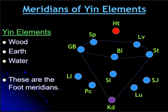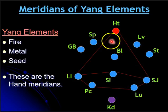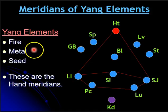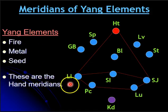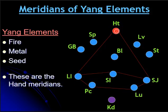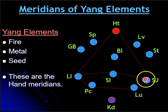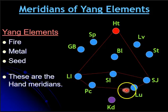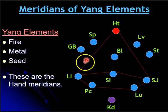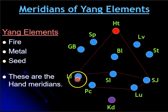Now we come to the meridians of the yang elements. The yang elements are fire, metal, and seed, and these are the hand meridians. You'll have the pericardium, lung, and heart meridians that go to the hands and then become the large intestine, sanjiao, and small intestine meridians. All of these meridians are hand meridians, and you can see that they form another cone with a base all going to a tip at the heart.